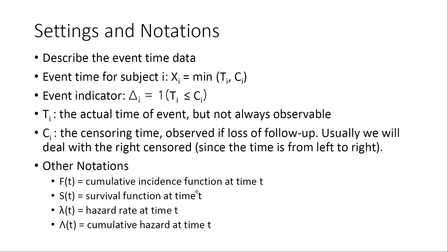In a real example: follow a large cohort and at a certain time point t, 30% of subjects die — that 30% is the cumulative incidence F(t), and the remaining 70% is the survival function S(t). The hazard rate lambda(t) is the rate of incidence at a specific time t — basically how large or small the risk or hazard is. Big Lambda(t) is the cumulative hazard function, the sum of little lambda(t) from time zero up to time t.